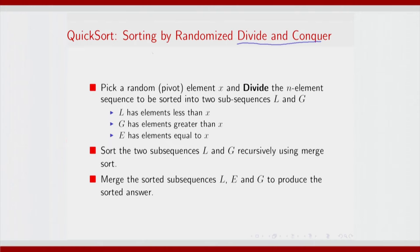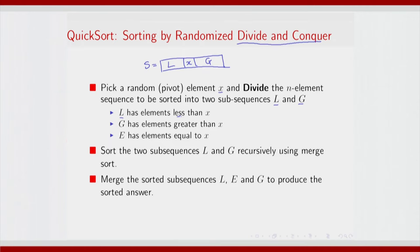In particular, given a sequence s, quicksort is hinged upon choosing a pivot element x, and then based on this pivot element x, identifying the set of elements in s which are less than x and the set of elements in s which are greater than x. So, pick a random element x, then divide the n-element sequence to be sorted into two subsequences l and g, such that l has elements less than x and g has elements greater than x.